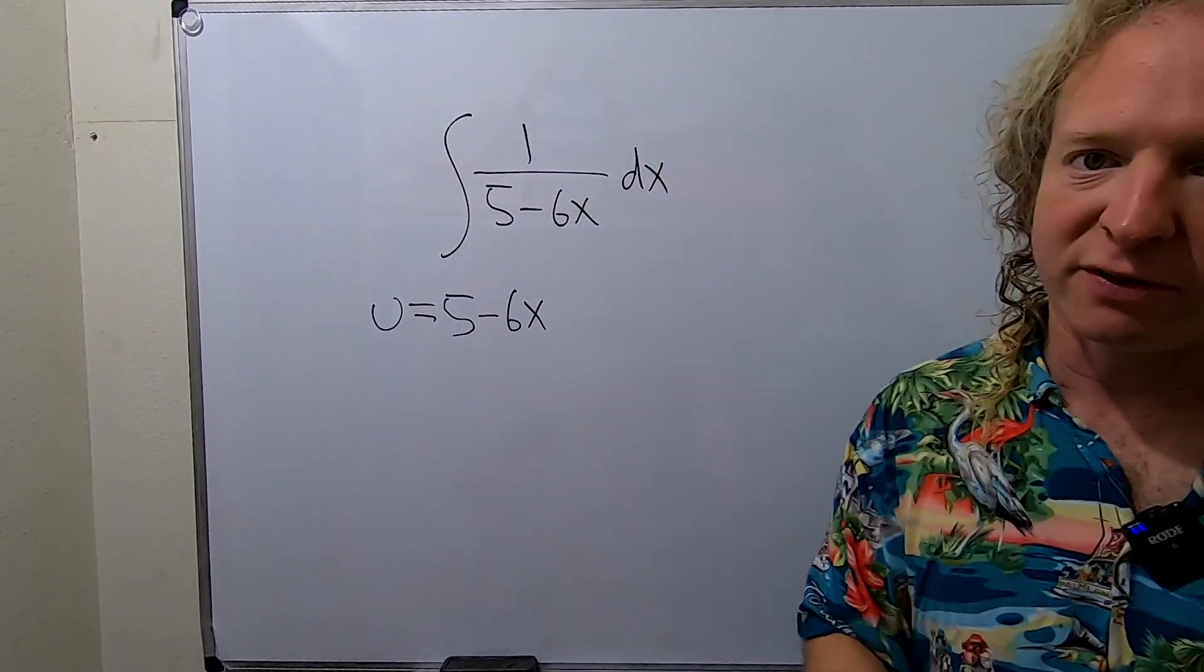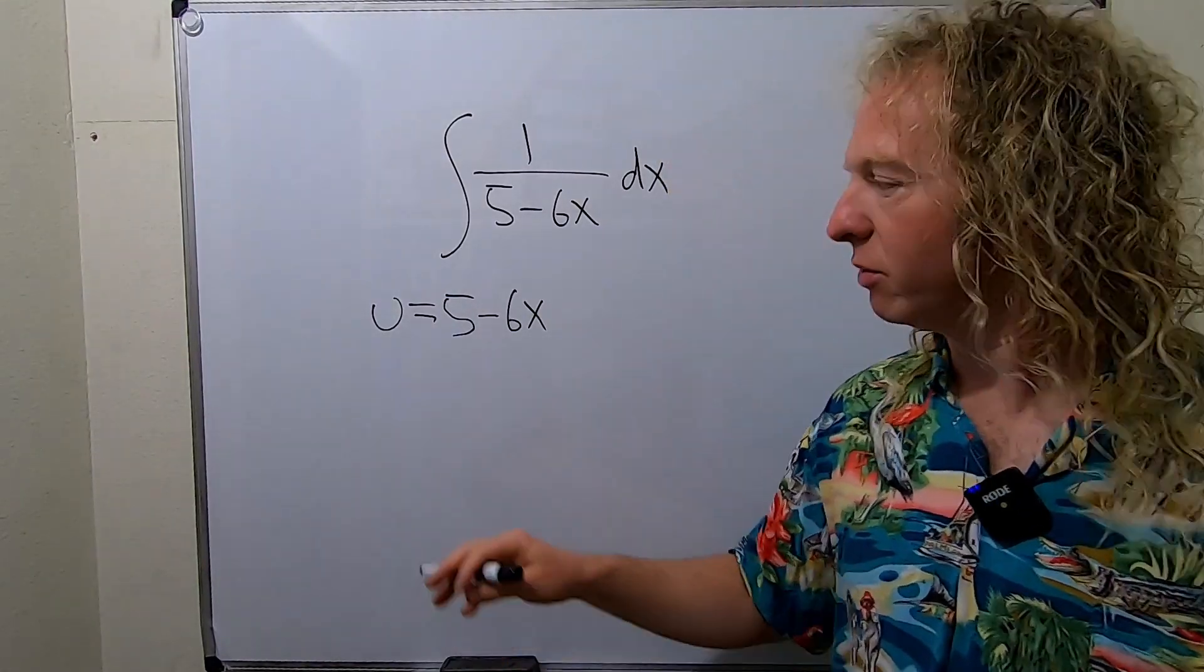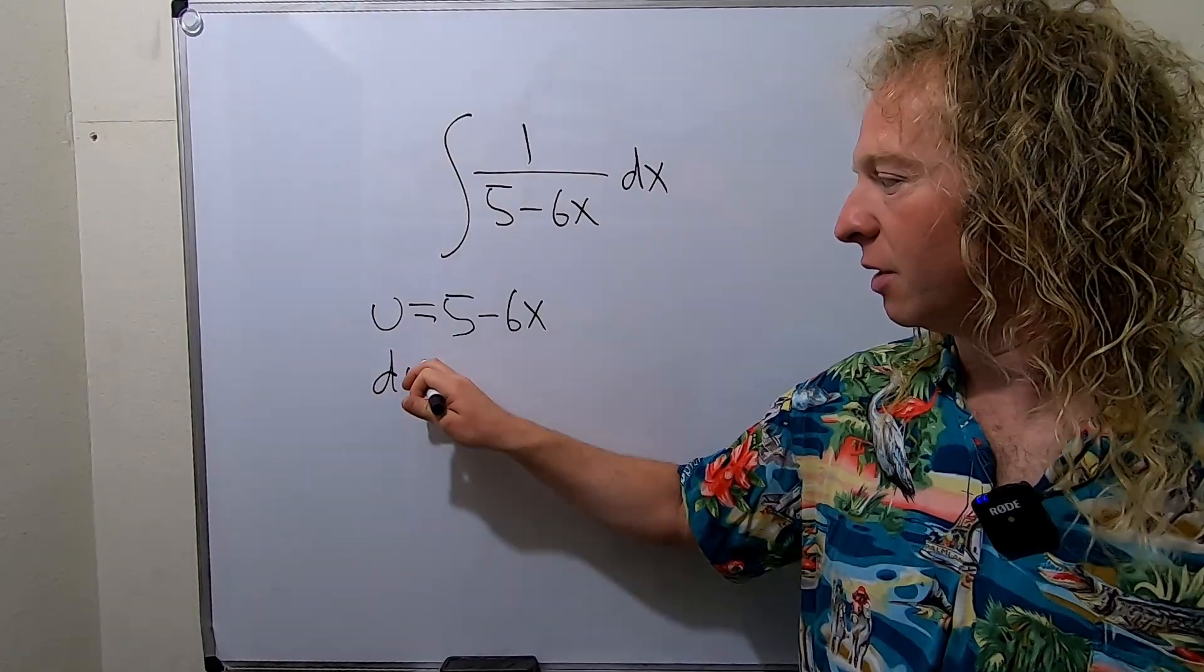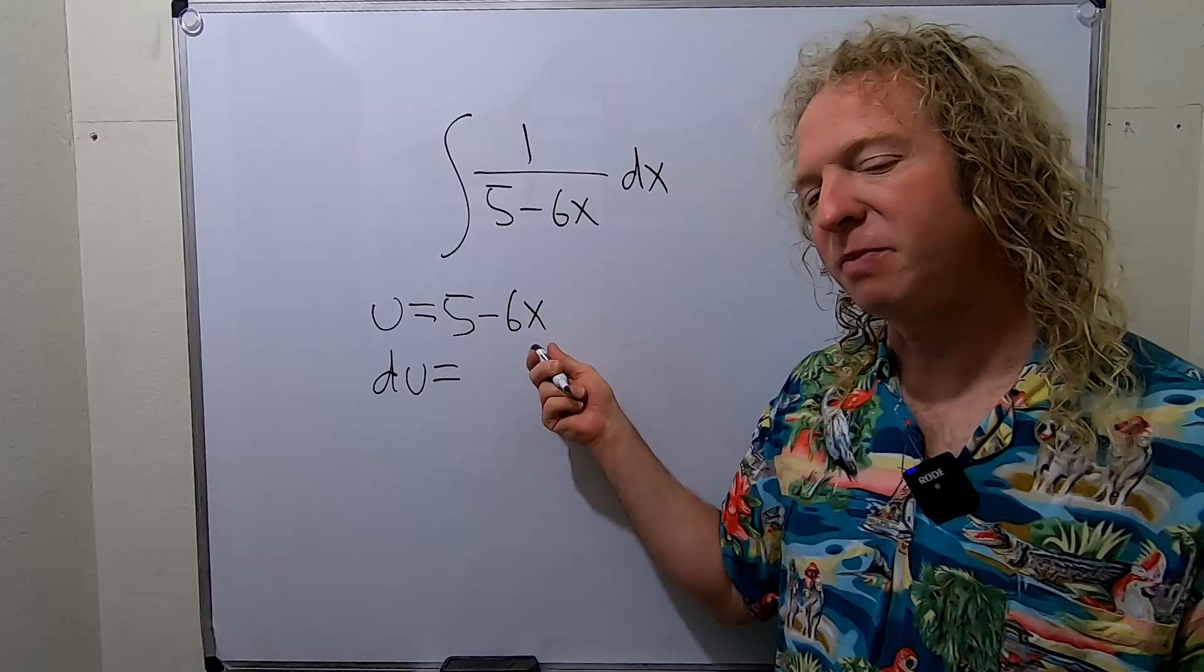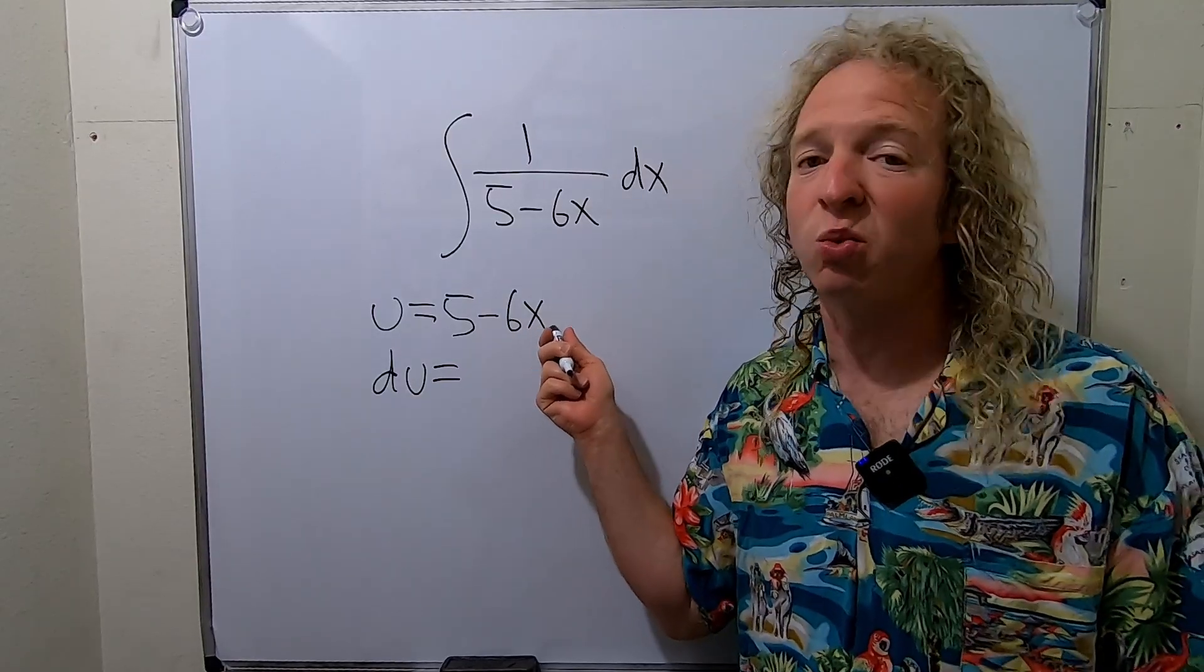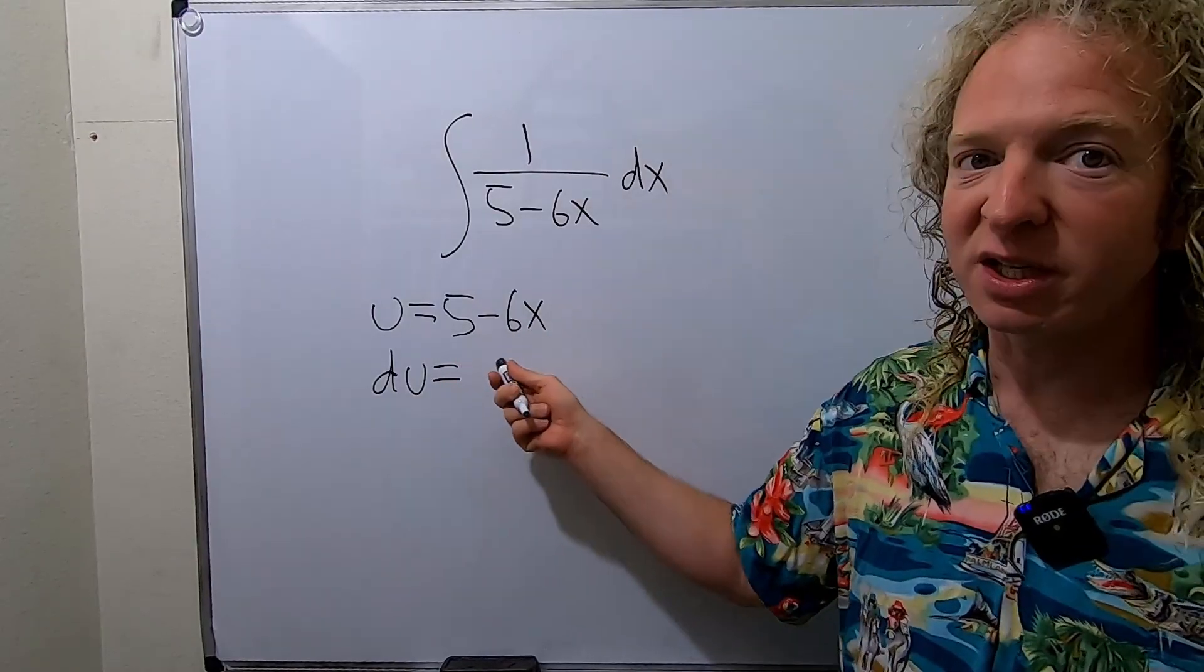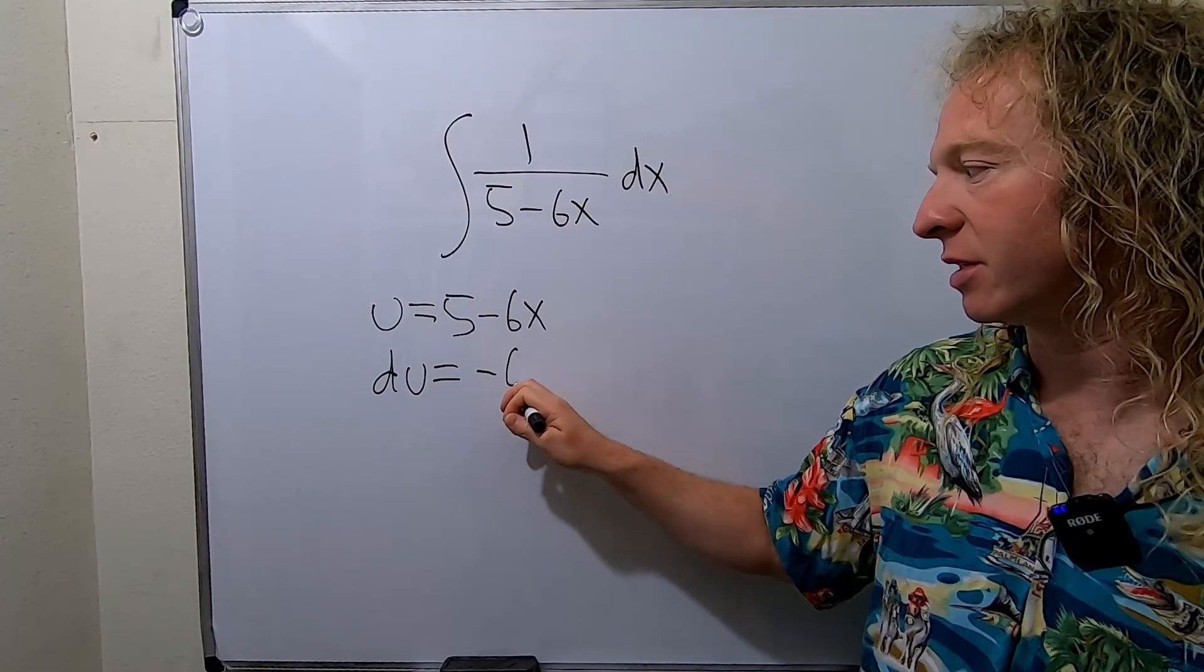So now we have to take the derivative, so the derivative of u is du. The derivative of 5 is 0, the derivative of this piece, well the derivative of x is 1, so we just get negative 6 times 1, so we just get negative 6 dx.